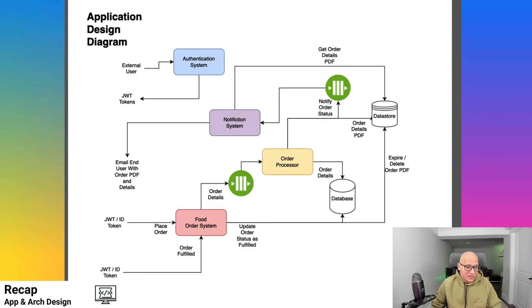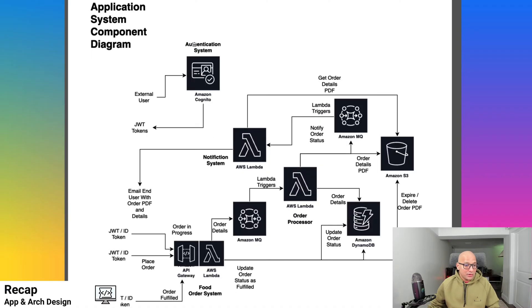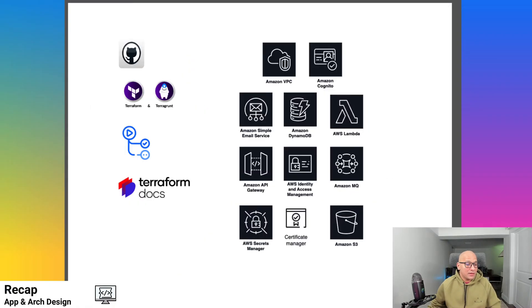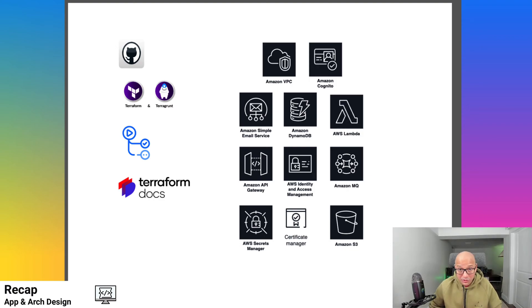So far, what we have gone over is the application design diagram and the individual workflows and what they're going to look like. We have also replaced these individual workflows with the AWS components we're going to use to implement them. We have also gone over the different modules in Terraform that we're going to create, and the tools we're going to use to implement our infrastructure as code systems.